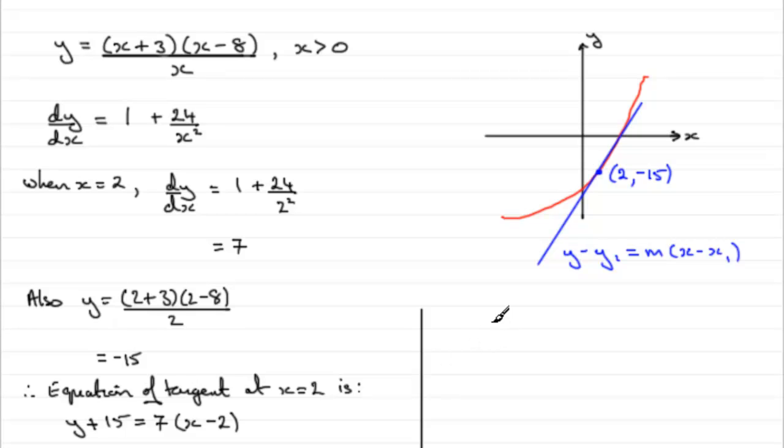So if you did that, we're going to have y plus 15 equals, and expand out the bracket, you're going to get 7x minus 14. Take 15 from both sides and you end up with y equaling 7x and then minus 14 minus 15 is minus 29. And there's your equation of your tangent.